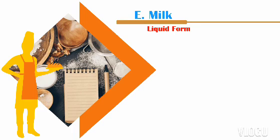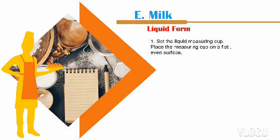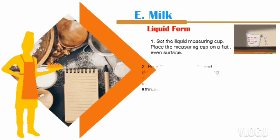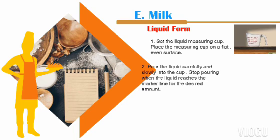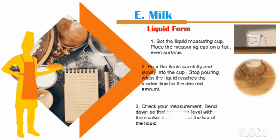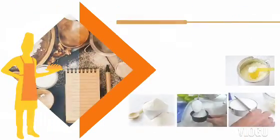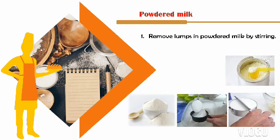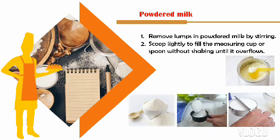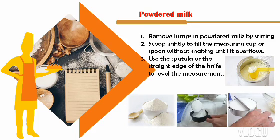For milk in liquid form: set the liquid measuring cup on a flat even surface. Pour the liquid carefully and slowly into the cup. Stop pouring when the liquid reaches the marker line for the desired amount. Check your measurement by bending down so your eyes are level with the marker line, and look at the top of the liquid. For powdered milk: remove lumps by stirring. Scoop lightly to fill the measuring cup or spoon without shaking until it overflows. Then use a spatula or the straight edge of a knife to level the measurement.